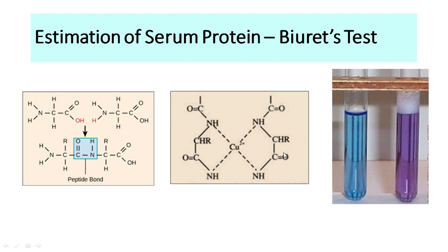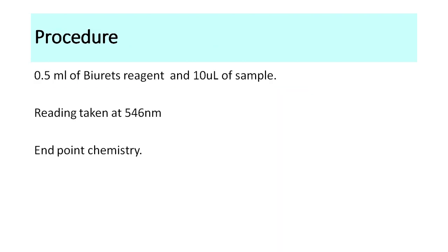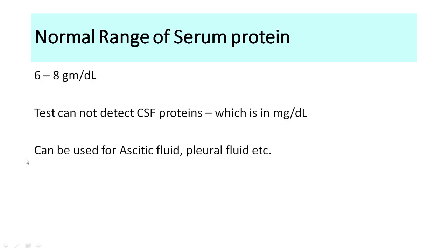The procedure of the Biuret test: we take 0.5 ml of the Biuret reagent and add 10 microliters of the sample, incubate it for some time, and then take a reading at 546 nanometers. This test is an endpoint chemistry. The normal range of serum proteins is between 6 to 8 grams per deciliter.